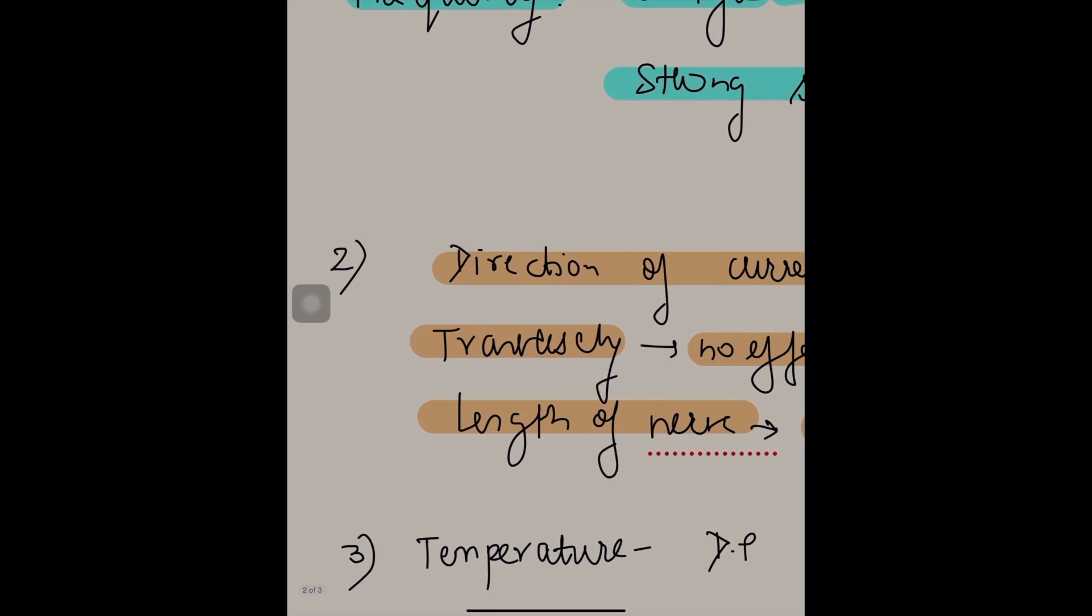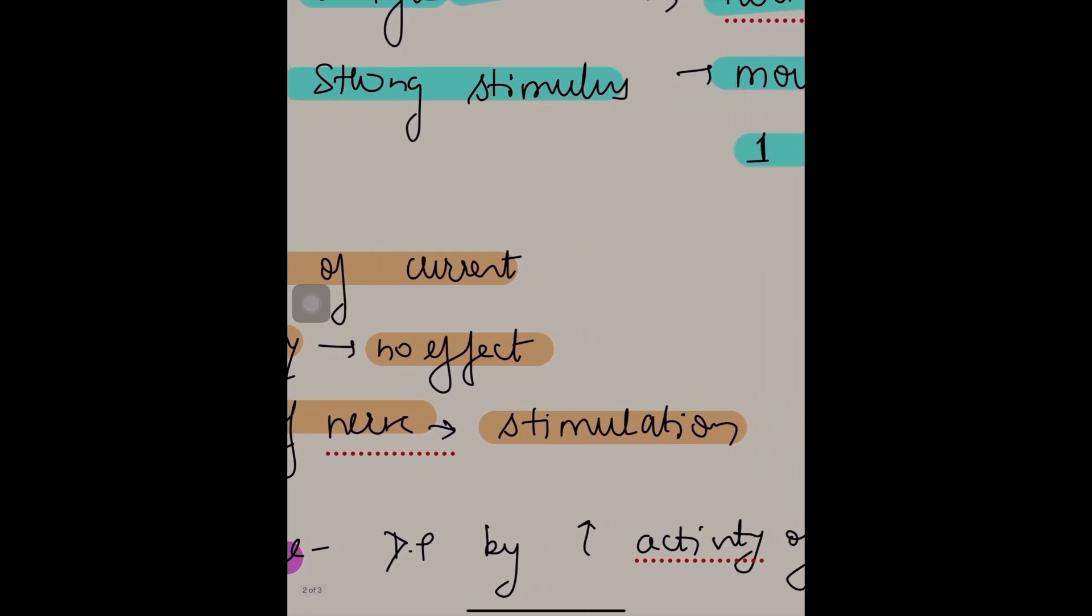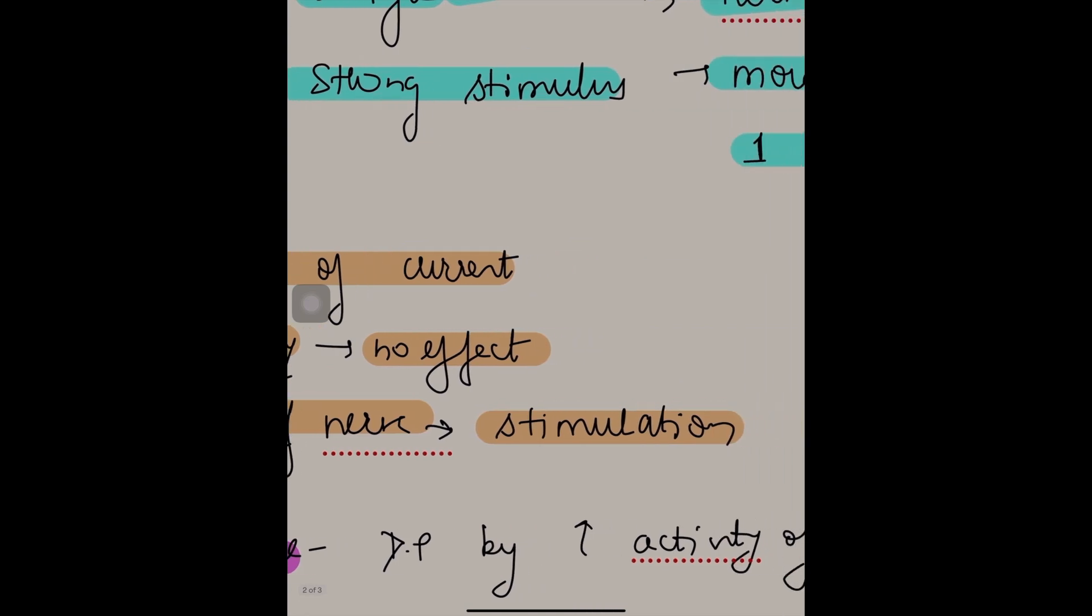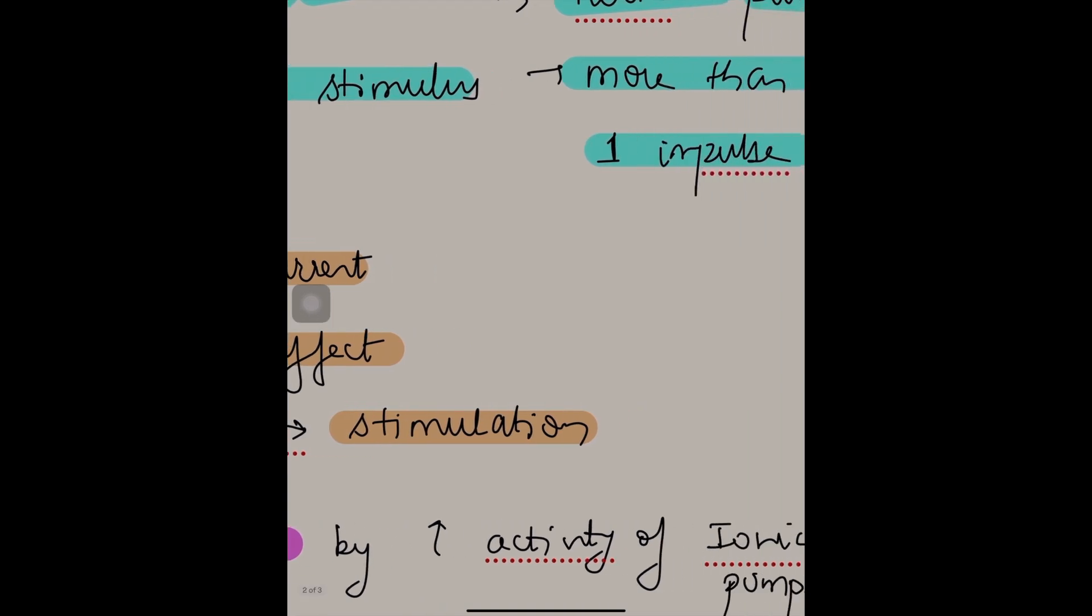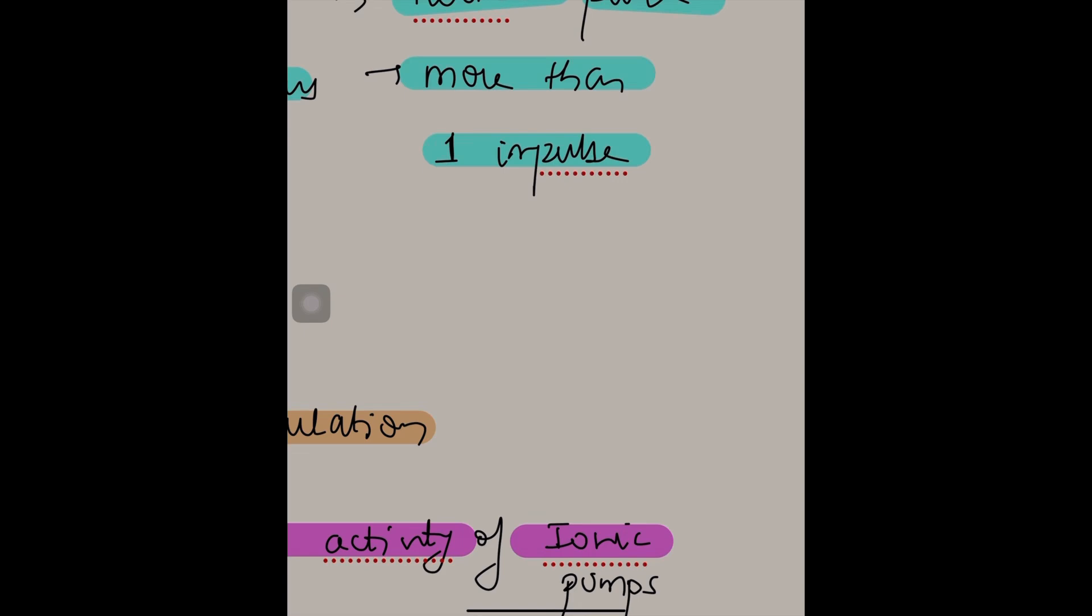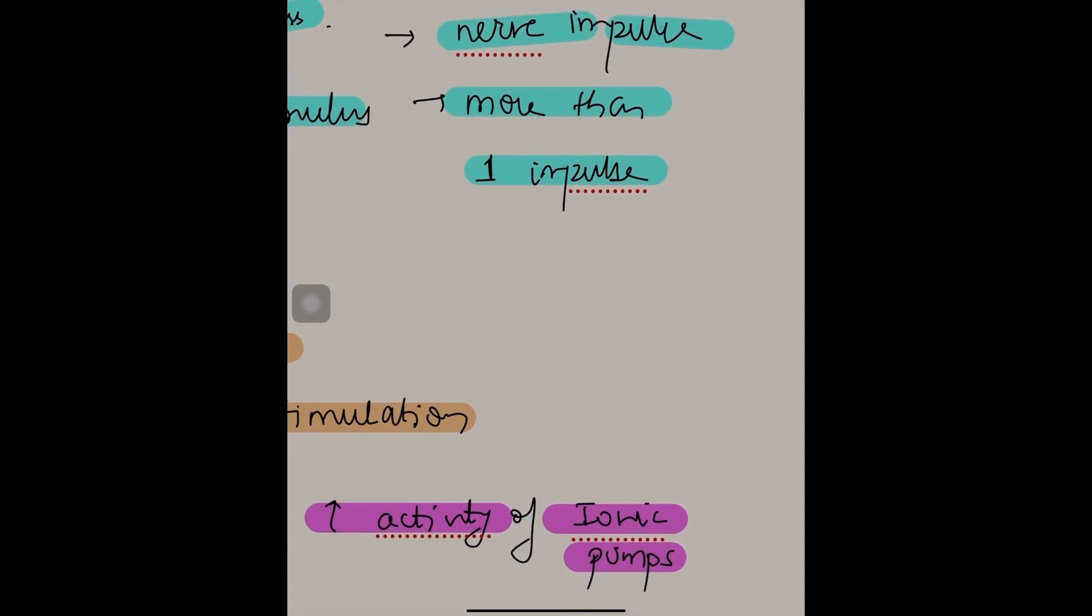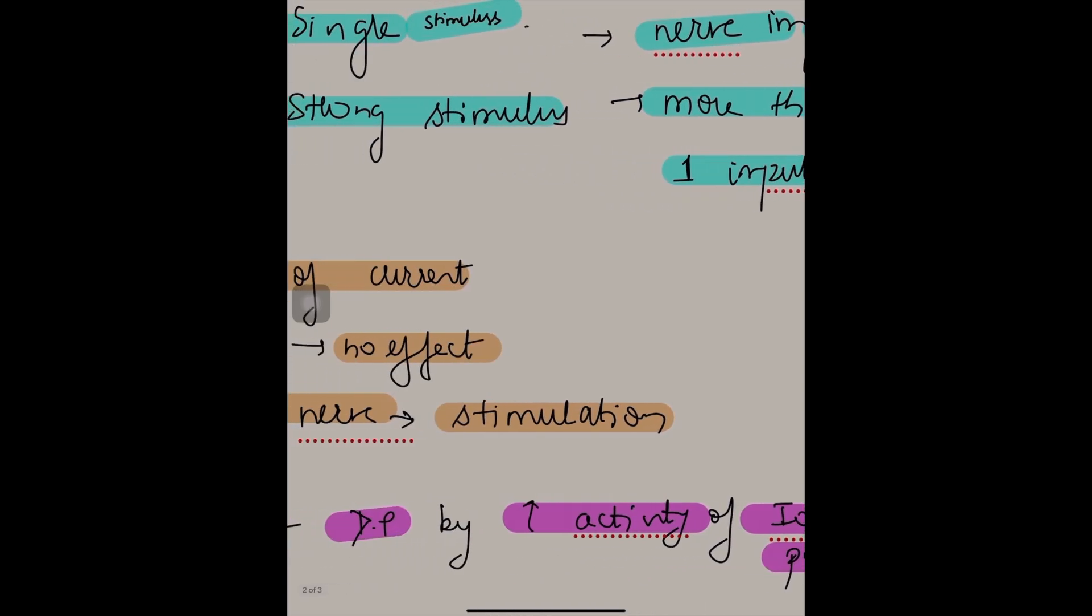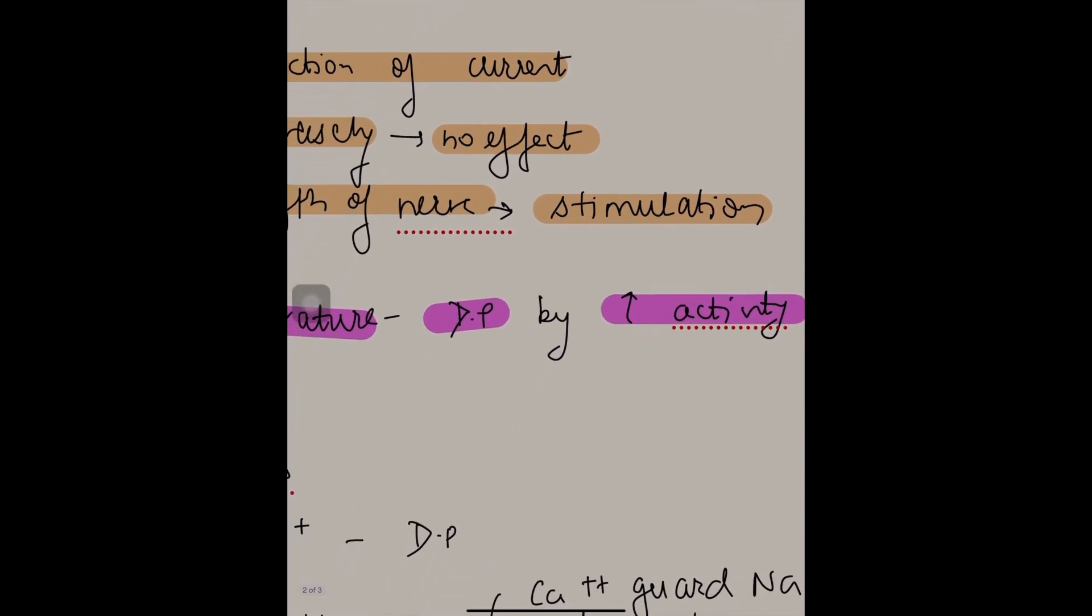Now let us go to temperature. Excitability is directly proportional to temperature. The reason is because when temperature increases, there is increased activity of the ionic pumps. Vice versa, when there is decreased temperature, there is decreased activity of ionic pumps.